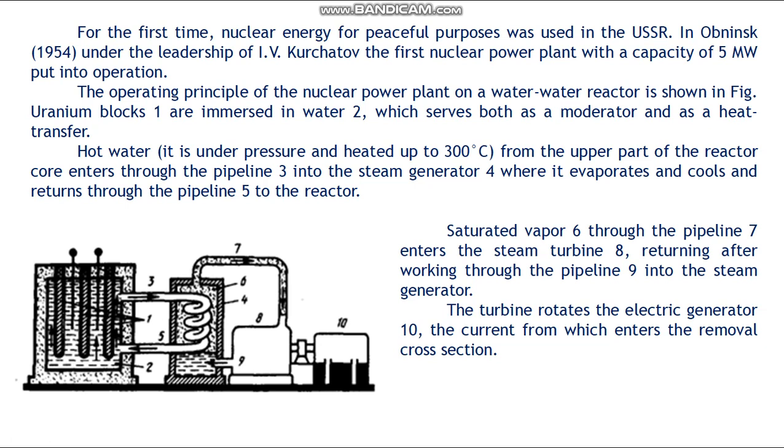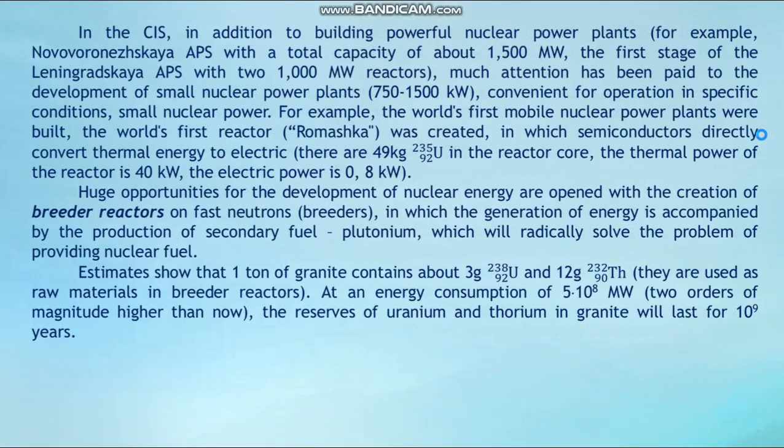The current from the generator enters the removal cross-section. In the CIS, in addition to building powerful nuclear power plants — for example, the Novovoronezh nuclear power station with a total capacity of about 1,500 MW and the first stage of the Leningrad NPP with two 1,000 MW reactors — much attention has been paid to the development of small nuclear power plants with 750 to 1,500 kW, convenient for operation in specific conditions.